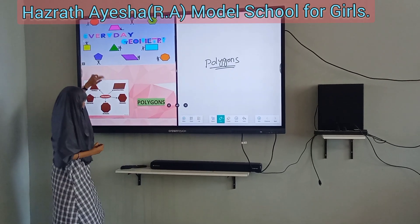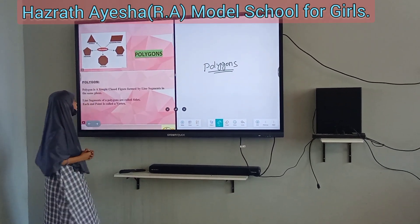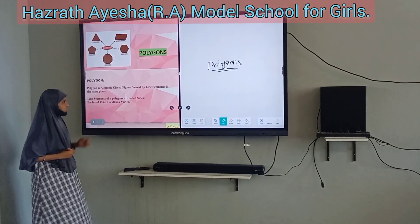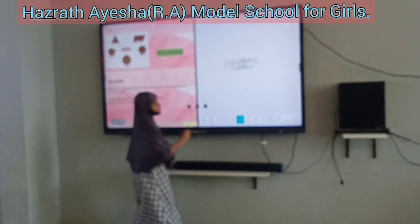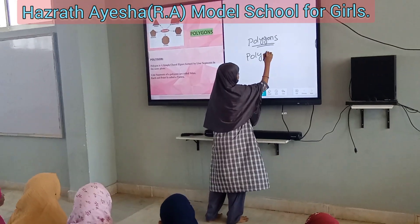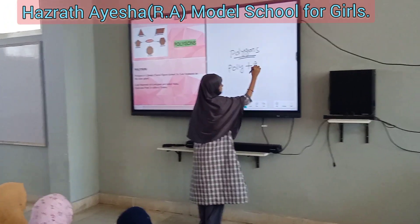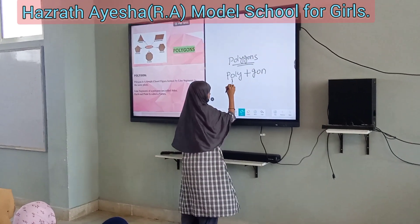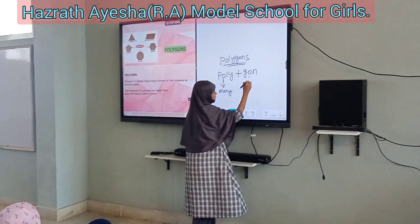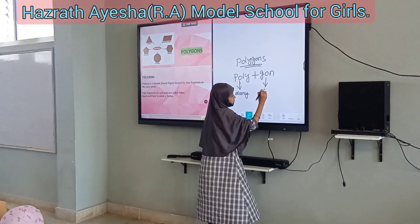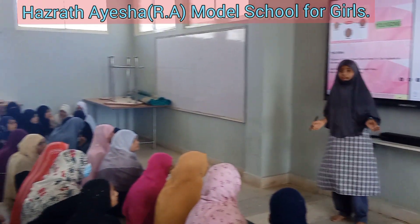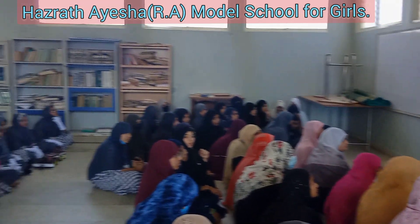Let's see the definition. A polygon is a shape formed by line segments. It is a combination of two words: poly plus gon. Poly means many, and gon means sides. That means a shape having many sides is called a polygon.